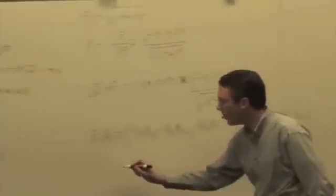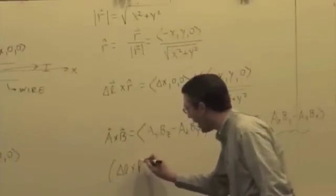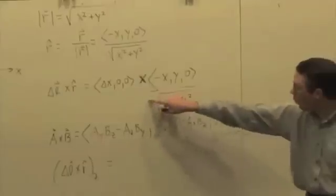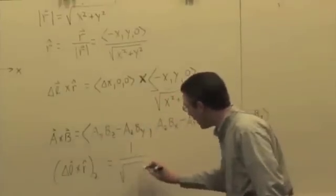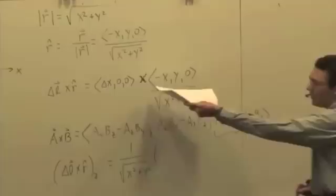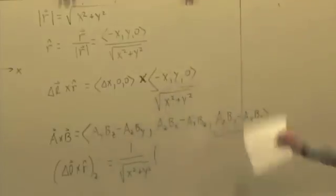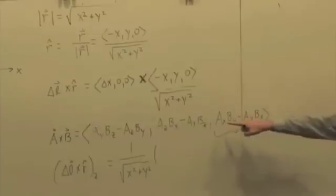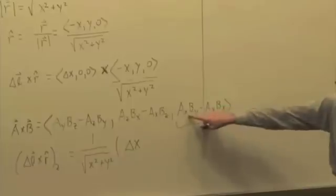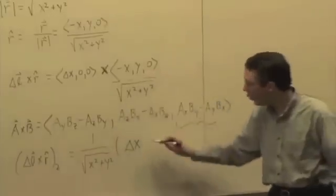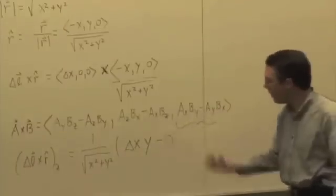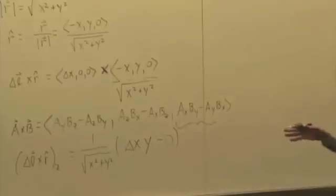So the z component of this cross product, and I'll write it as delta L cross r hat z component. Let me bring this one over the magnitude out. It's just a factor that multiplies the whole thing. So I'm taking the cross product of delta x, 0, 0 with negative x, y, 0. So I have the x component of the first vector. So that's going to be delta x. I have the y component of the second vector, which is y, minus the y component of the first vector, which is zero, and I'm done. So that's the z component of that cross product.